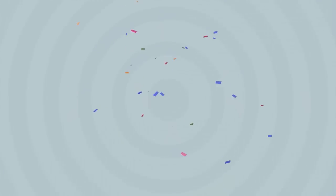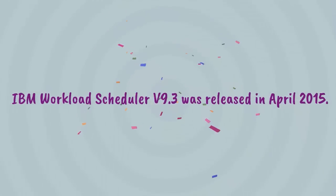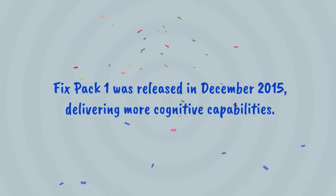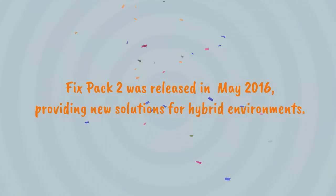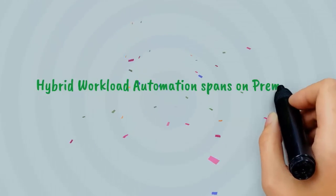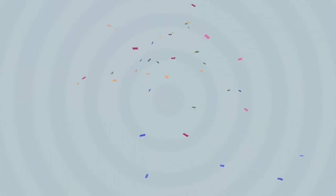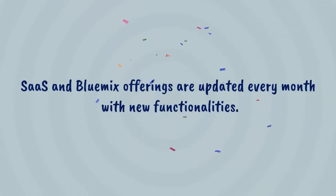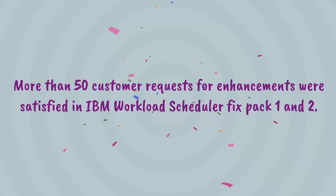Here are the latest updates regarding our releases. IBM Workload Scheduler version 9.3 was released in April 2015. FixPack 1 was released in December 2015, delivering more cognitive capabilities. FixPack 2 was released in May 2016, providing new solutions for hybrid environments. Hybrid Workload Automation spans on-premises, on-cloud, software-as-a-service, and IBM Bluemix offerings. Software-as-a-service and Bluemix offerings are updated every month with new functionalities. More than 50 customer requests for enhancements were satisfied in IBM Workload Scheduler FixPack 1 and 2.